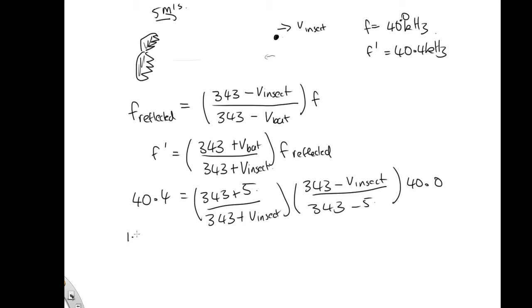we end up with 1.01 is equal to 1.02958, times the 343 minus the velocity of the insect, over 343 plus the velocity of the insect.